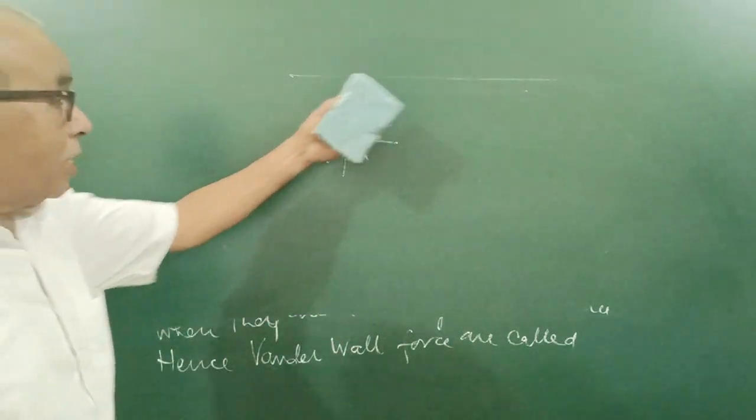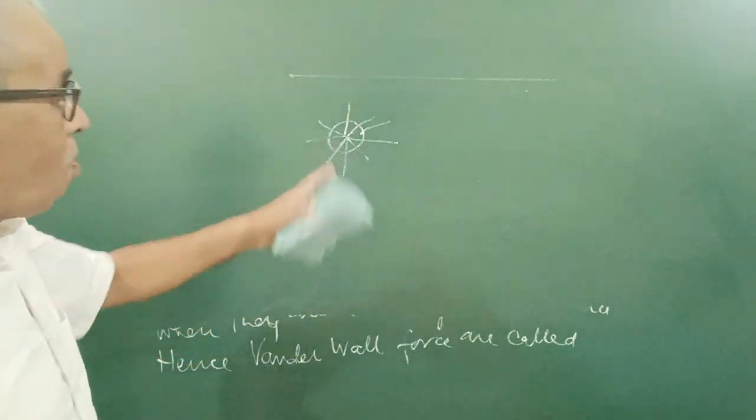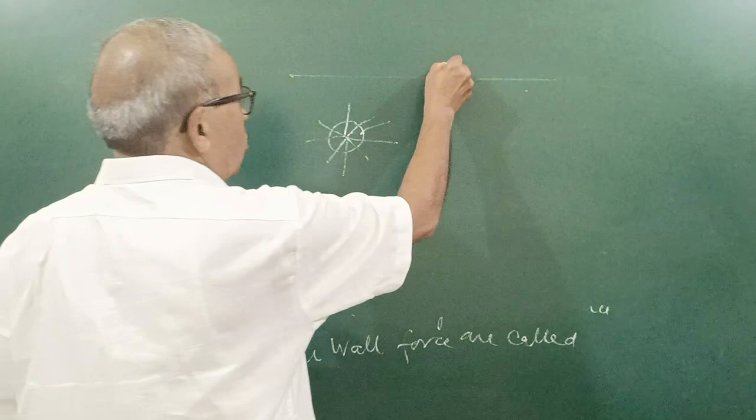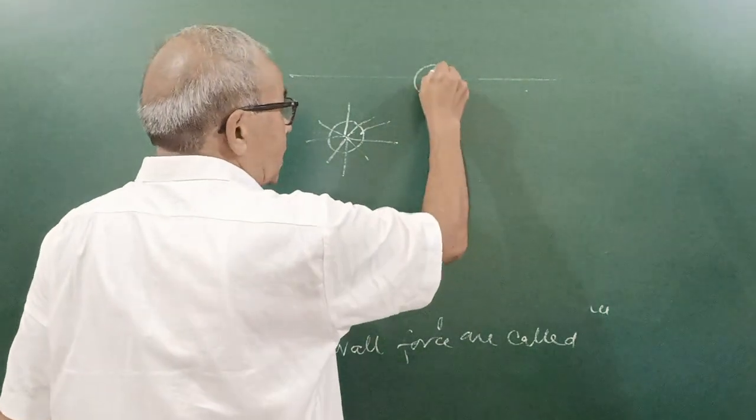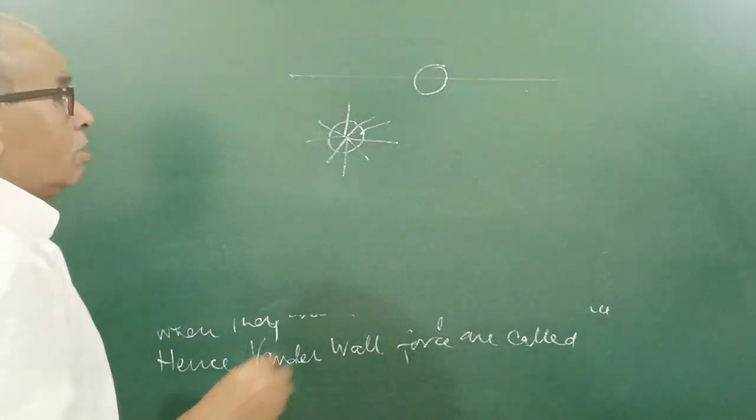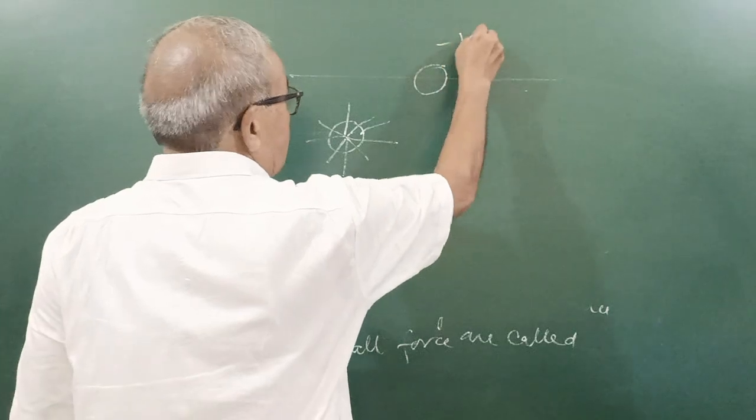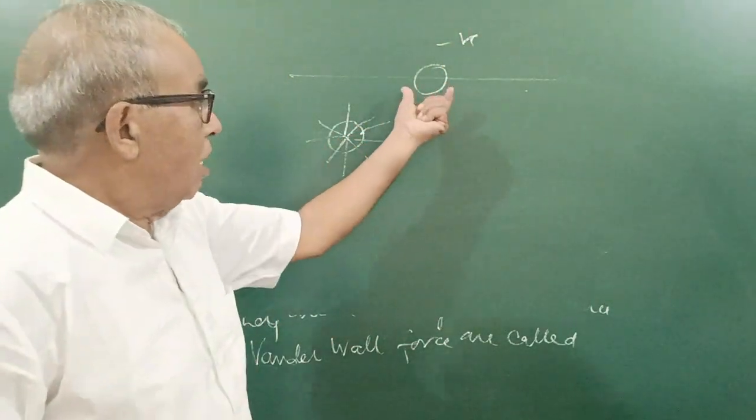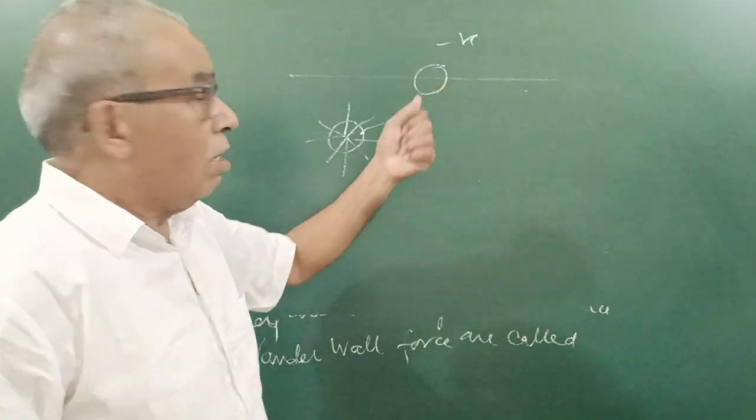Now if we consider a molecule here on the surface, it is less attracted. So its negative potential energy is lower than this. Means molecules on surface have lower energy.